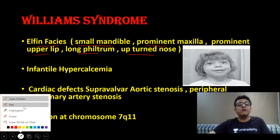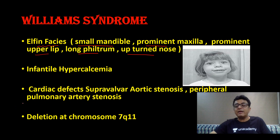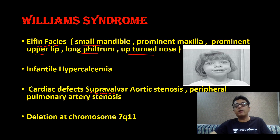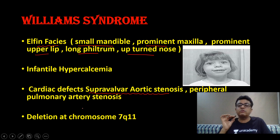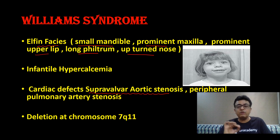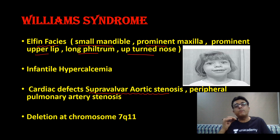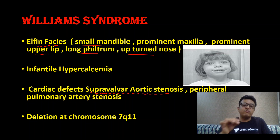Sometimes we are not able to diagnose Williams syndrome only by the features. So sometimes a patient comes to us with a murmur, and when we do an echo, it shows supravalvular aortic stenosis — there is a high association of supravalvular aortic stenosis with Williams syndrome. Then we go back and re-examine the child and find prominent maxilla, prominent upper lip, long philtrum, and upturned nose. We have to see a syndrome as a whole with all the features.